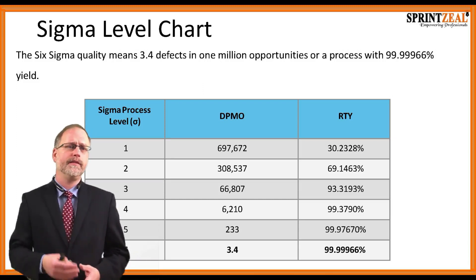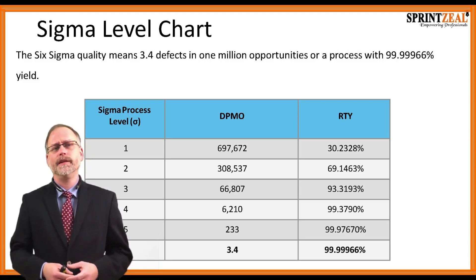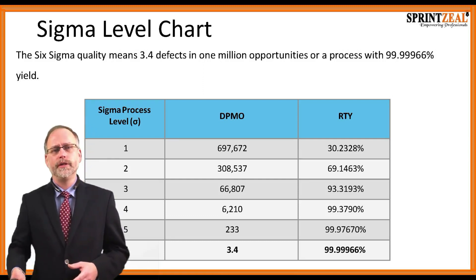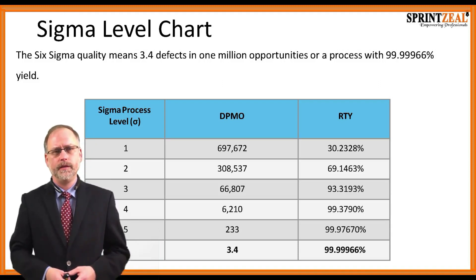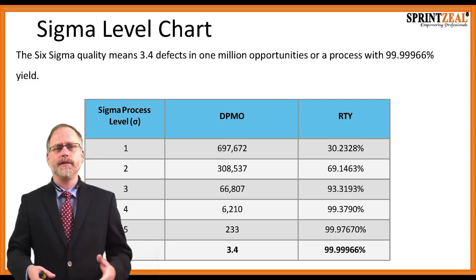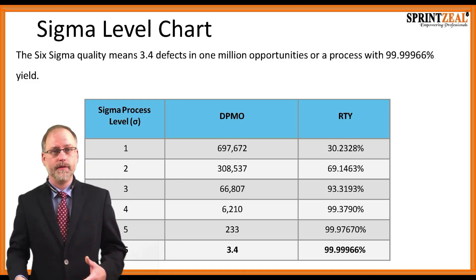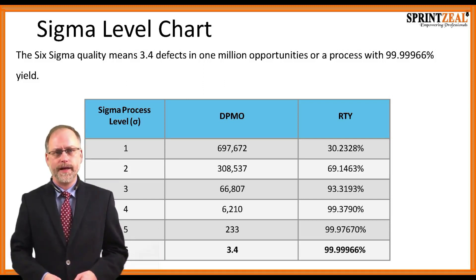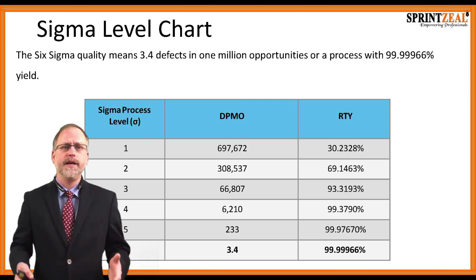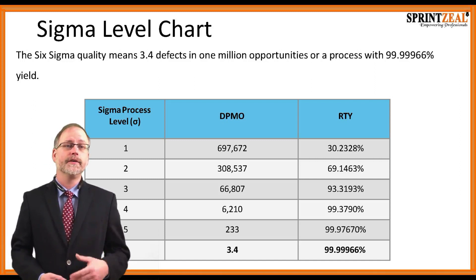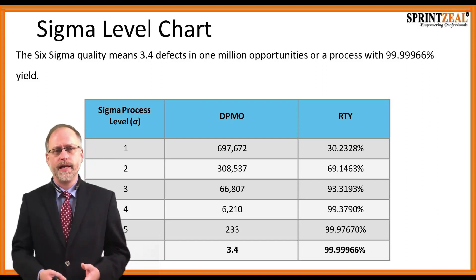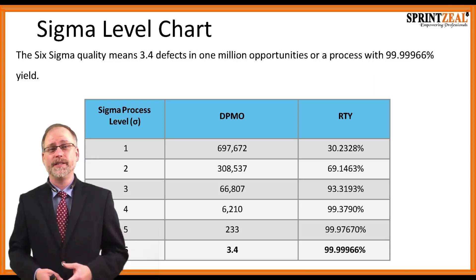Six Sigma quality means 3.4 defects per 1 million opportunities, or a process yield of 99.99966%. Looking at Sigma levels 1 through 6: at Sigma level 1, there are 697,672 defects per million opportunities, giving a rolled throughput yield of 30.23%. A unit may have multiple opportunities to create a defect. So out of 1 million opportunities, getting it wrong 697,672 times means 30% is good and 70% is bad.